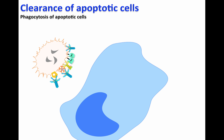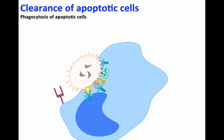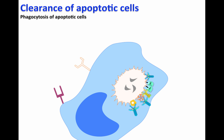Apoptotic cells coated with several proteins, including C3B and sub-fragment iC3B, are recognized by complement receptors such as CR1, CR3, and CR4 found in many cells. Macrophages also have a receptor called CD91 that is able to bind to C1Q. The result of this interaction between ligands and receptors leads to an efficient removal of apoptotic cells by macrophages in a process called phagocytosis.